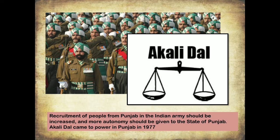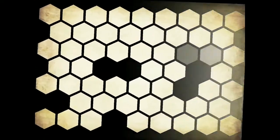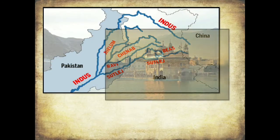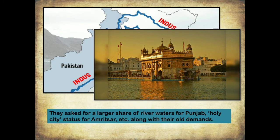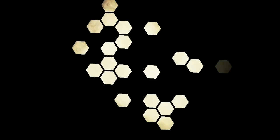They demanded that more autonomy should be given to the state of Punjab. The Akali Dal came to power in Punjab in 1977, and then a number of additional demands were put forward, including a larger share of river water for Punjab and recognition of Amritsar as a holy city, along with their earlier demands.